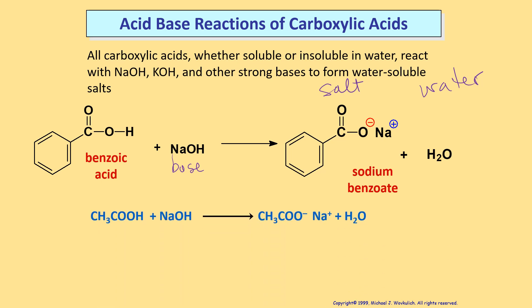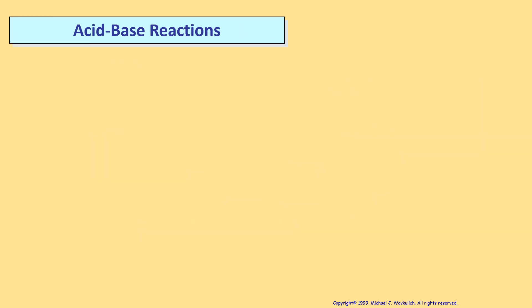Here's another example. This time we have ethanoic acid, also known as acetic acid, and the base is sodium hydroxide. So we have our acid and our base and we get salt and water. And this is sodium ethanoate — but there's a common name for it too: sodium acetate.